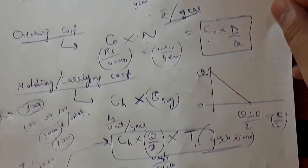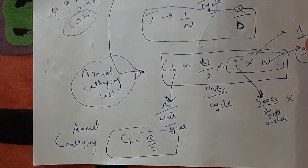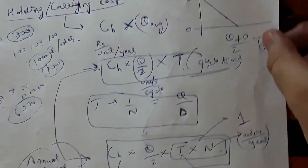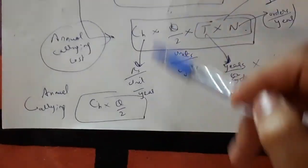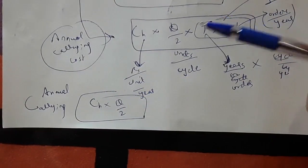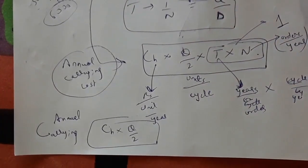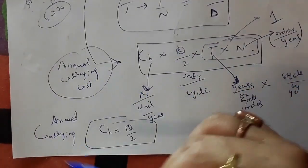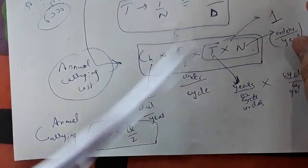On the other hand, the holding cost is directly proportional to Q. The more inventory you keep, the more space it occupies, the more maintenance and rent you pay for the storage area. So holding cost is linear with Q. As Q increases, ordering cost decreases, but annual carrying/holding cost increases — one goes down, the other goes up.